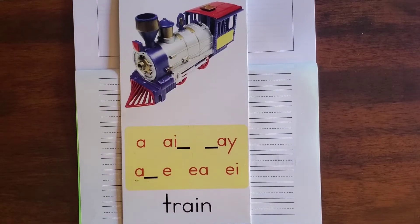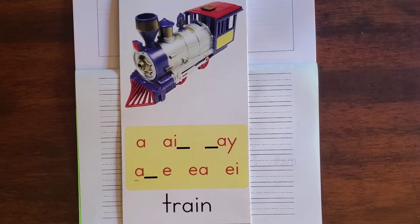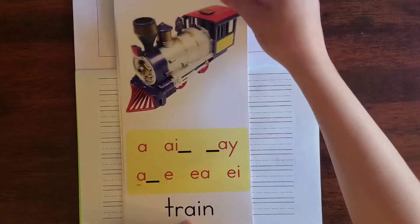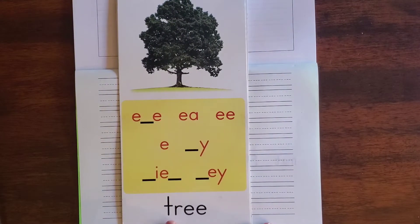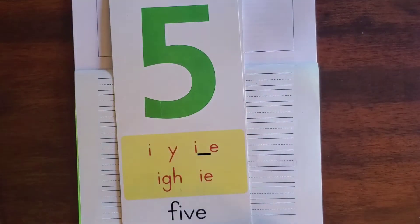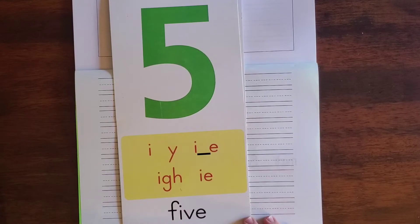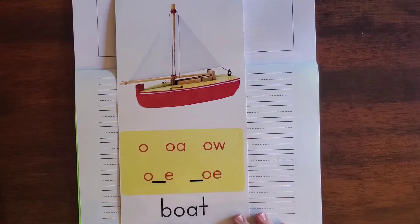Hello friends, we are going to be doing some blending. We will be practicing some review sounds from Unit 4: the long A as in the word 'train,' the long E as in the word 'tree,' the long I as in the word 'five,' and the long O as in the word 'boat.' I will say the word, you will say the word, I will break it up into its sounds, and after each sound, repeat after me. I will then write it in my journal, and you can write it in your journal as well.